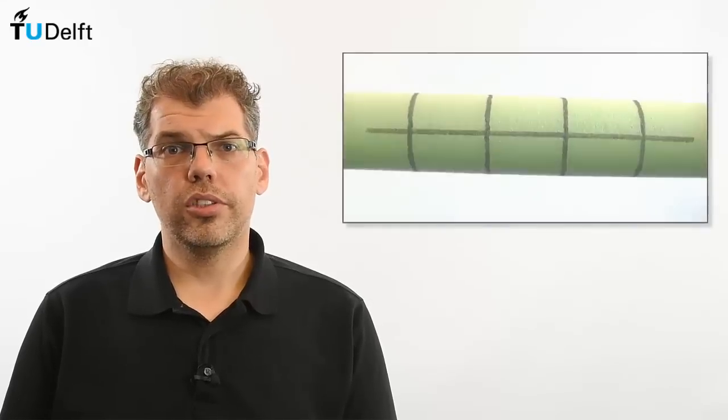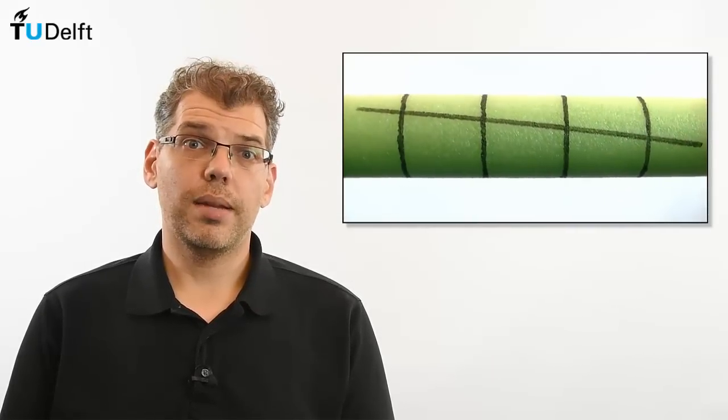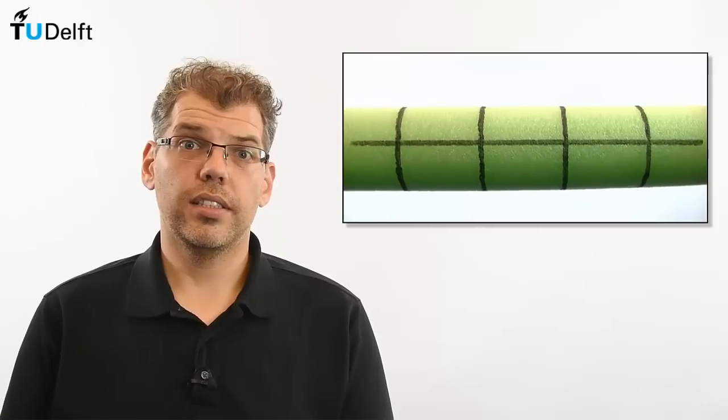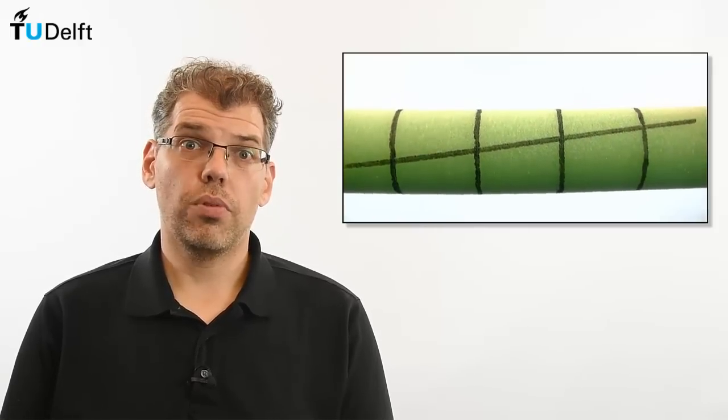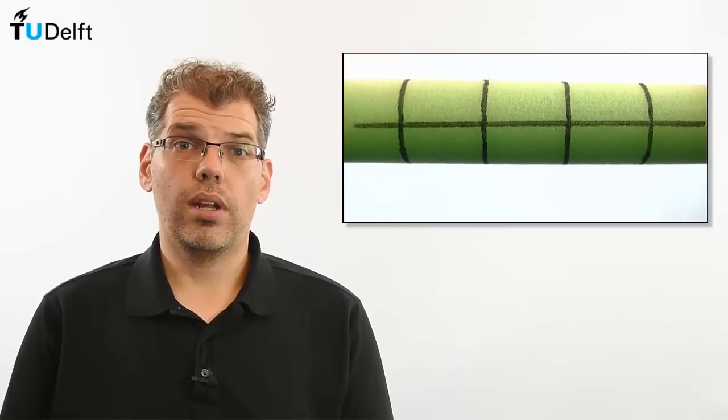If you recall, a circular shaft subjected to torsion will deform in a way such that planes perpendicular to the axis of the shaft remain straight, do not warp or distort, and do not extend relative to each other.